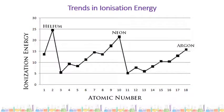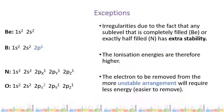There are some exceptions to this general trend. Looking at the second period, we can see exceptions from beryllium to boron and from nitrogen to oxygen. If we write out the electron configuration, the irregularities are to do with how stable the electron configuration is. In beryllium, an electron is being removed from a filled sublevel, whereas in boron it's being removed from a partially filled sublevel. We know that a filled or half-filled energy level has extra stability, so the electron being removed from a more unstable arrangement will require less energy.